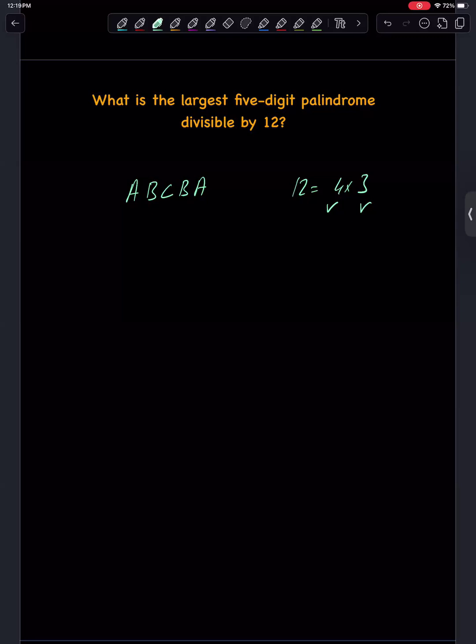Let's start with divisibility rule for 4. This number must be an even number, so the largest even digit is 8. We should pick A equals 8.